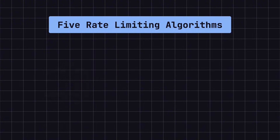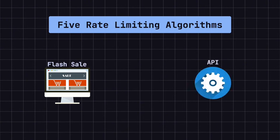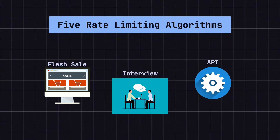For example, during a flash sale on an e-commerce website, rate limiting can prevent too many users from accessing the system at once and causing it to crash. In API services, rate limiting ensures that the service remains stable by preventing any single user from overloading the system and disrupting access for others. Additionally, rate limiting algorithms are common topics in technical interviews, testing a candidate's understanding of traffic management and system performance optimization.